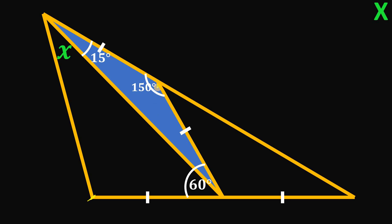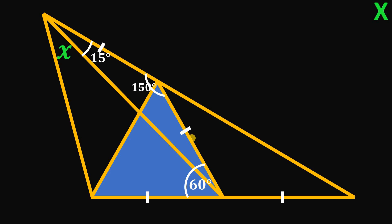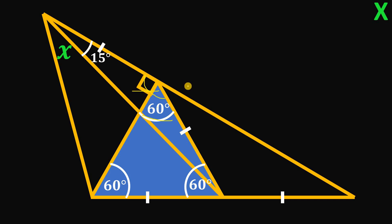Next, let's connect this point to this point to create a new triangle. Focusing on this isosceles triangle — two sides are equal and the vertex angle is 60 degrees — the base angles must be equal and sum to 120 degrees, giving 60 degrees each. The total angle was 150 degrees, so the remaining angle is 150 minus 60 equals 90 degrees. Since this triangle is equiangular, it is also equilateral, so all sides are equal.